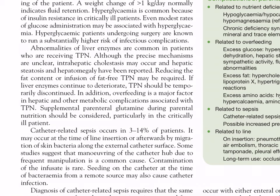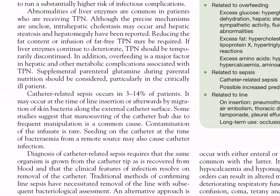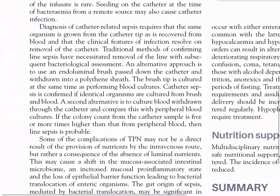Abnormalities of liver enzymes are common in patients receiving TPN; although the precise mechanisms are unclear, intrahepatic cholestasis, hepatic steatosis, and hepatomegaly have been reported. Reducing the fat content or infusing fat-free TPN may be required if liver enzymes continue to deteriorate; TPN should be temporarily discontinued. Overfeeding is a major factor in hepatic and other metabolic complications. Supplemental parenteral glutamine during TPN should be considered particularly in critically ill patients. Catheter-related sepsis can occur in 3–14% of patients.